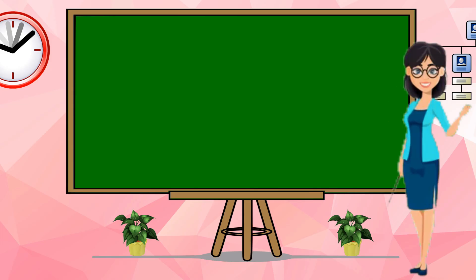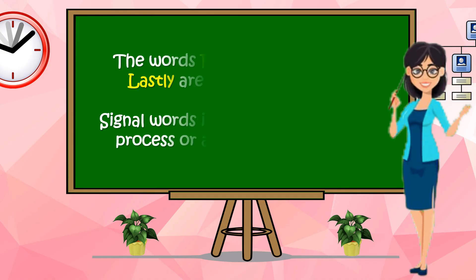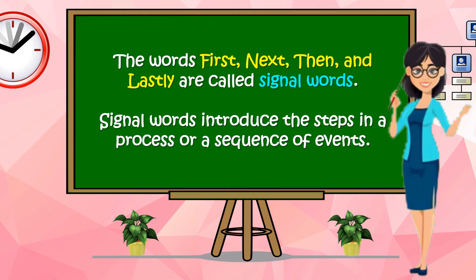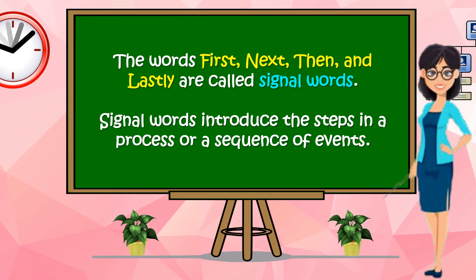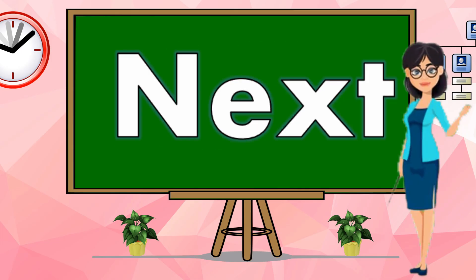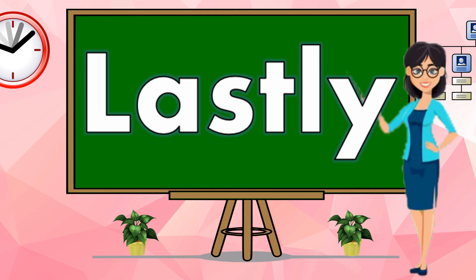Is this lesson clear to you kids? Very good! Always remember the words first, next, then, and lastly. They are called signal words. Signal words introduce the steps in a process or a sequence of events. What are the signal words again, class? First, next, then, and lastly. Very good!